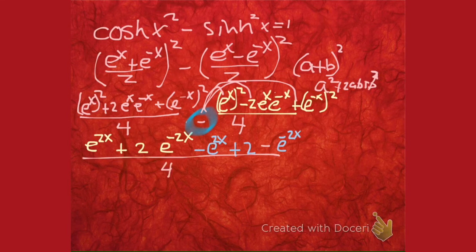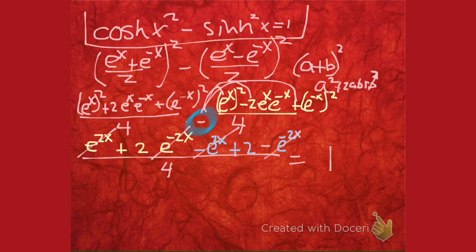But before we bore, we must point out that here we have additive inverses. And then 2 and 2 is 4. And that's how you get 1. So it's true. The hyperbolic cosine squared minus the hyperbolic sine squared is equal to 1.